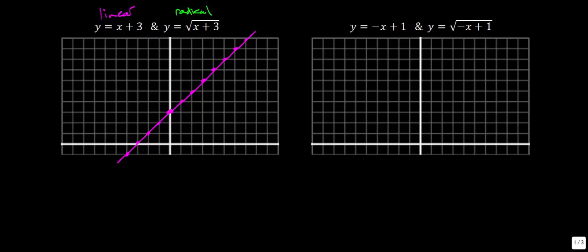Now let's see how the radical graph, done in green, is related. What value of x makes the expression under the radical equal to 0? If we put in negative 3: negative 3 plus 3 is 0, and the square root is 0. So the point at negative 3 is at y equals 0. Notice that's a common point between the two graphs. If we put in negative 4: negative 4 plus 3 is negative 1, and we can't take the square root of negative 1, so there are no points to the left of negative 3. Trying negative 2: negative 2 plus 3 is 1, and the square root of 1 is 1 — both common points.